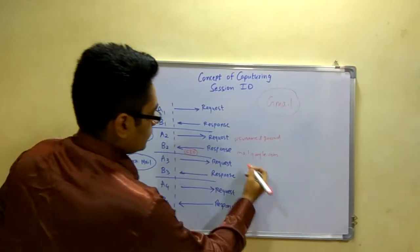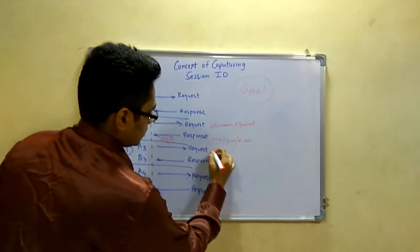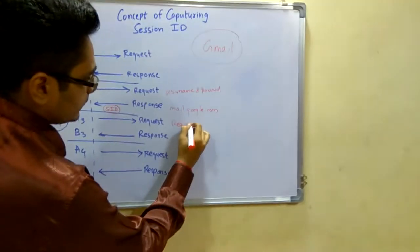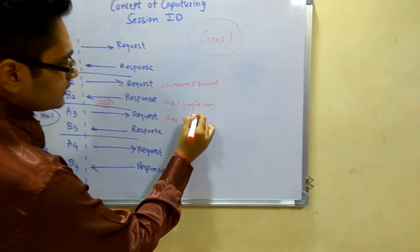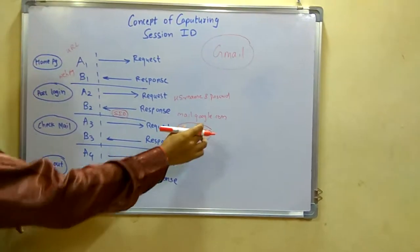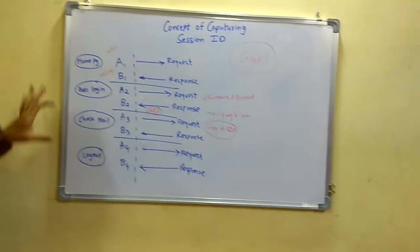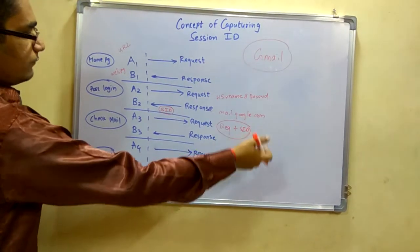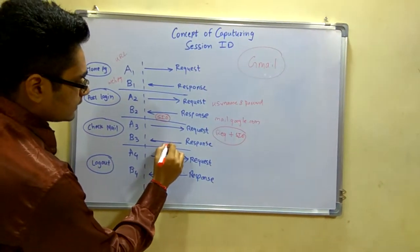Along with this request you will be providing the request plus the session ID. So a session ID plus request is used for checking the mail. After this you would be getting another session ID in the response.